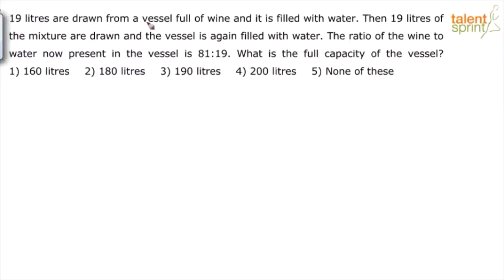19 liters are drawn from a vessel full of wine and it is filled with water. Then 19 liters of the mixture are drawn and the vessel is again filled with water. The ratio of the wine to water now present in the vessel is 81 is to 19. What is the full capacity of the vessel? Options are 160 liters, 180 liters, 190 liters, 200 liters, or none of these.